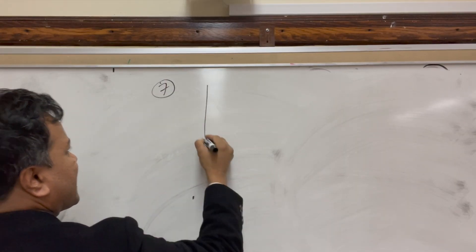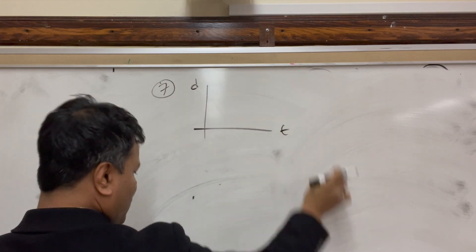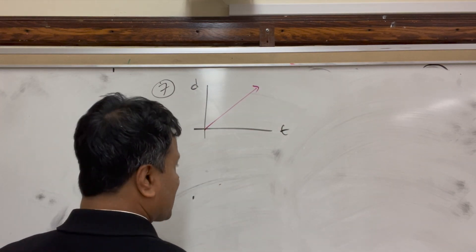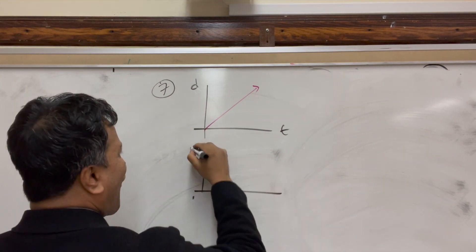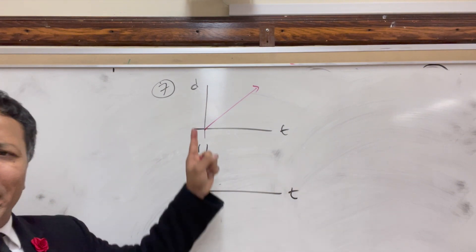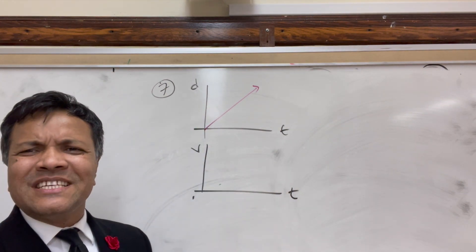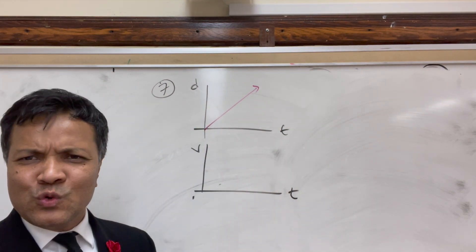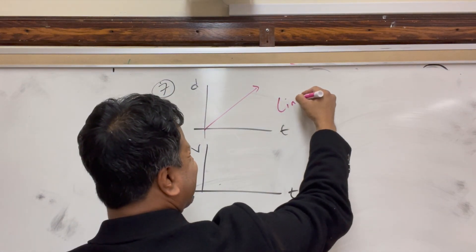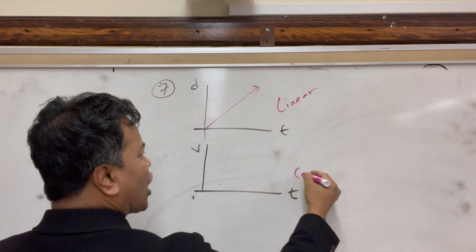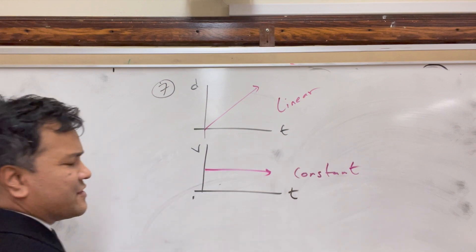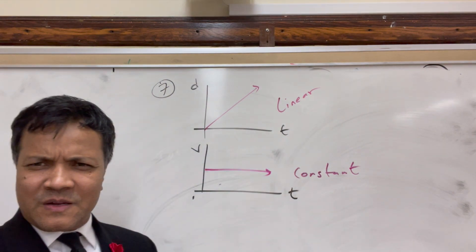Problem seven: you are given a D-T graph which is a diagonal line, and you are asked to convert it to a V-T graph. Going from D-T to V-T you lose one degree of polynomial. A diagonal line becomes a constant — a perfectly horizontal level line.